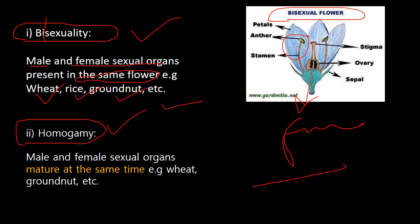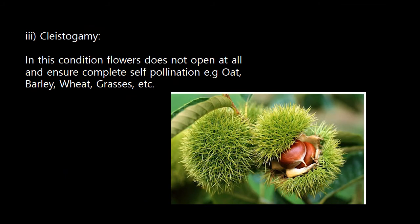The next term is homogamy. 'Homo' means same, and 'gamy' refers to reproduction. So homogamy is when the male and female sexual organs mature at the same time. This term will keep coming up, so it is important to know what it means.